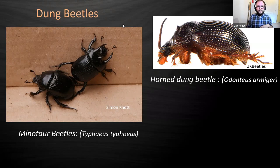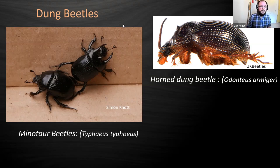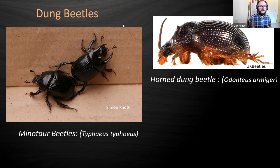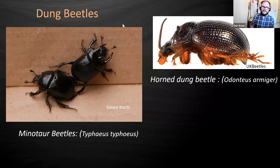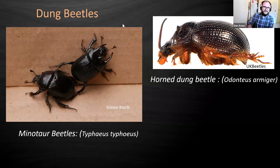We've also got Odonteus armiger - it's got this wonderful horn. This is an incredibly rare species in the UK, though it's common in Europe. Males have this amazing horn and they feed on dung and fungus in underground tunnels, much like Minotaur beetles. If you find one in your trap, record it - there's a great recording scheme called the British Scarabs recording scheme.